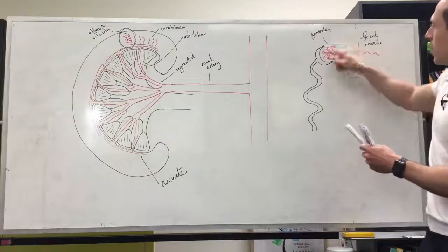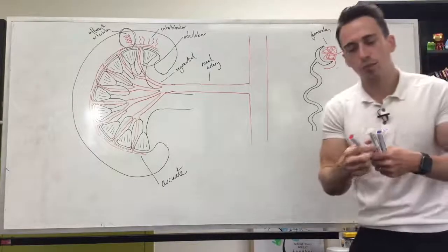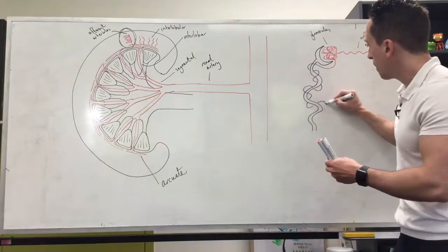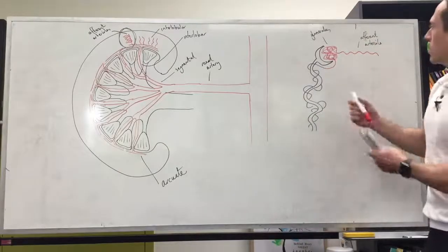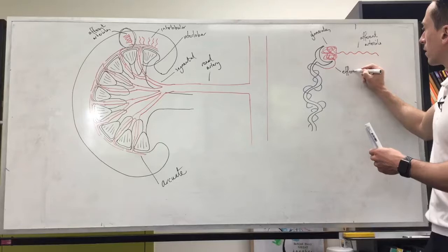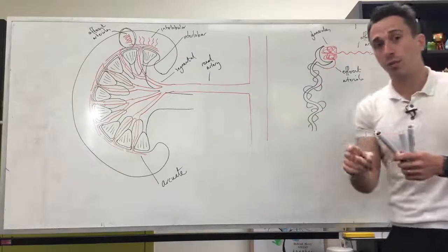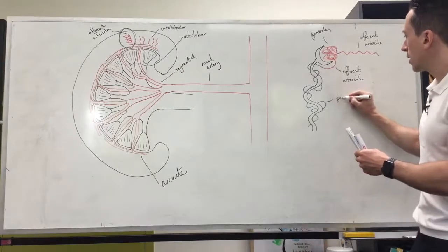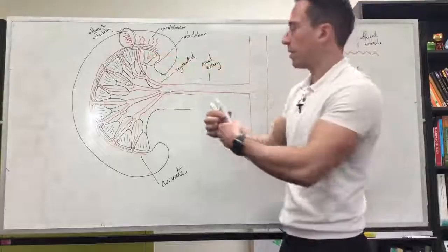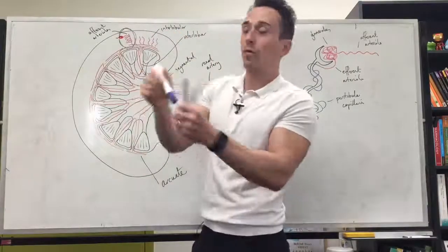You get the afferent arterioles leading into the glomerulus, and then on the other end of the glomerulus you've got the efferent arterioles. The efferent arterioles turn into a capillary bed that wraps around the nephron, or the tubules of the nephron — these are called peritubular capillaries. So: afferent arterioles → glomerulus → efferent arterioles → peritubular capillaries.